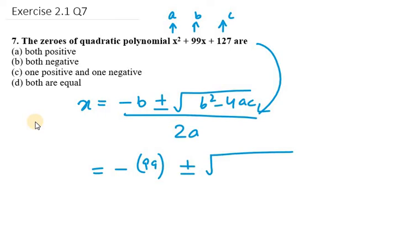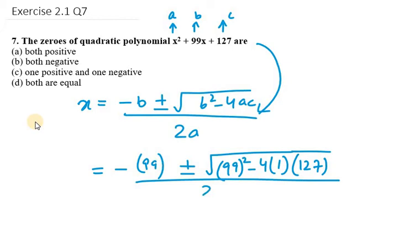So -b, b in this case is 99, ± √(b is 99 so 99² - 4ac, a is 1, c is 127) over 2 into a is 1.